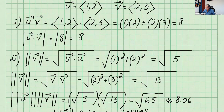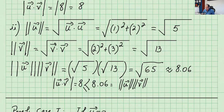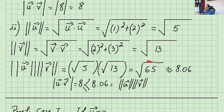Now let's find their magnitudes. The magnitude of u is the square root of u dot u itself, or using the Pythagorean theorem: the first component squared plus the second component squared, and you take the square root. So u dot u gives us the same thing, and if you calculate, you get square root of 5. The magnitude of v is square root of v dot v, that's 2 squared plus 3 squared, which is square root of 13. If you multiply the magnitudes, it's square root of 5 times square root of 13, which gives you square root of 35, approximately 8.06. The absolute value of u dot v was 8, so you see clearly it's less than 8.06.